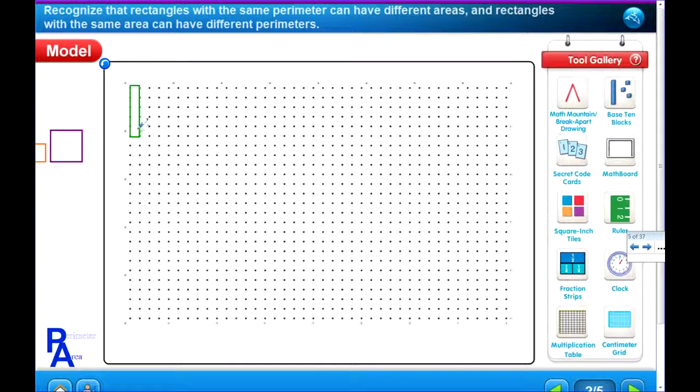1, 2, 3, 4, 5. This side has 5 centimeters, this side has 1, this side has 1, and this side has 5.